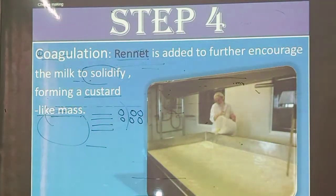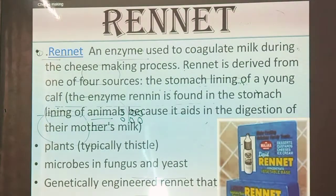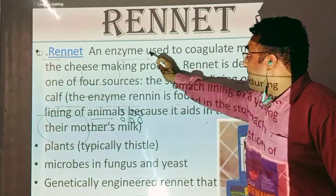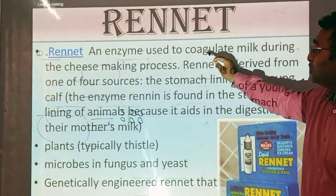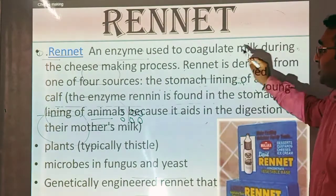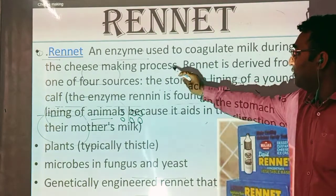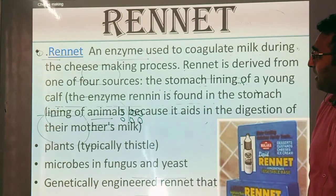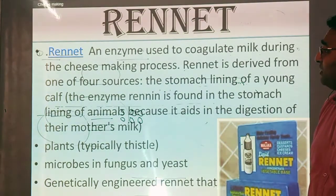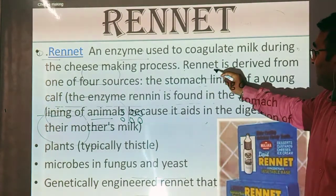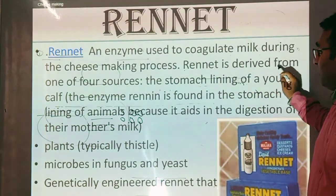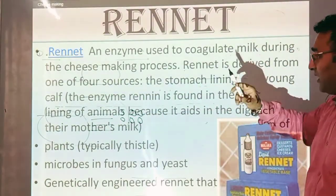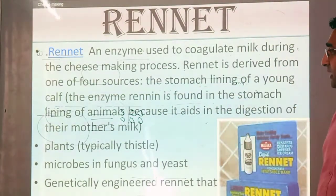The next step is adding the rennet enzyme, which is used to coagulate the milk during the cheese-making process. Rennet is derived from one of four sources; one source is the stomach lining of the young calf, which is used to help facilitate cheese formation.